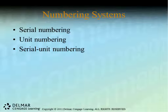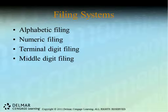Along with numbering systems, there are several types of filing systems. Filing systems are either alphabetic or numeric. With alphabetic filing, you don't need a Master Patient Index to locate records because they are filed by the patient's name. With numeric filing, you need some method — hence the Master Patient Index — to locate those records.